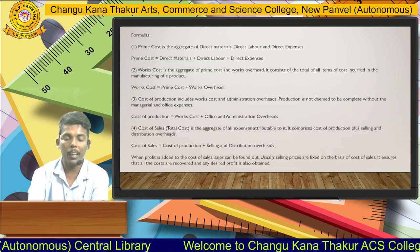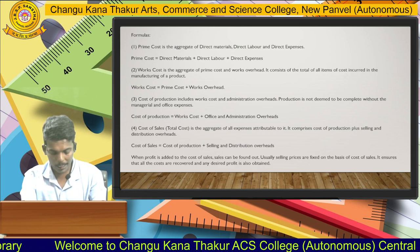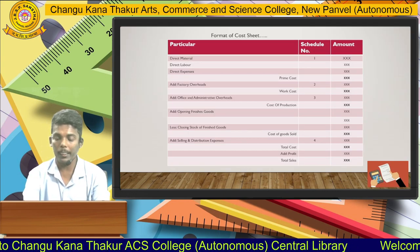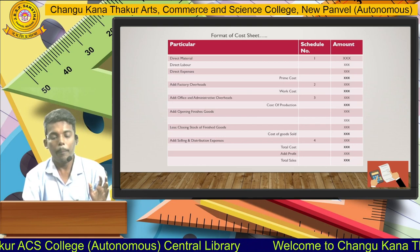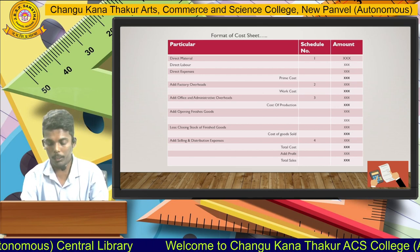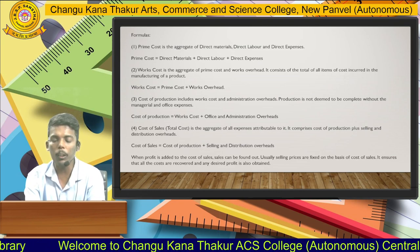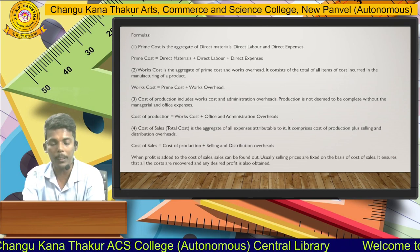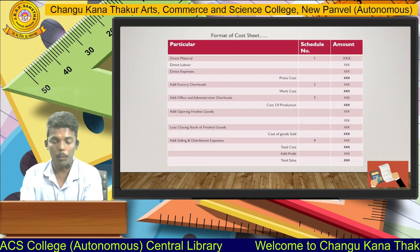The next formula is work cost. Work cost is the aggregate total of prime cost plus factory overheads. In the cost sheet, to prime cost we add the total of factory overheads to get the amount of work cost. The next formula is cost of production. Cost of production is calculated as: work cost plus office and administrative expenses or overhead.